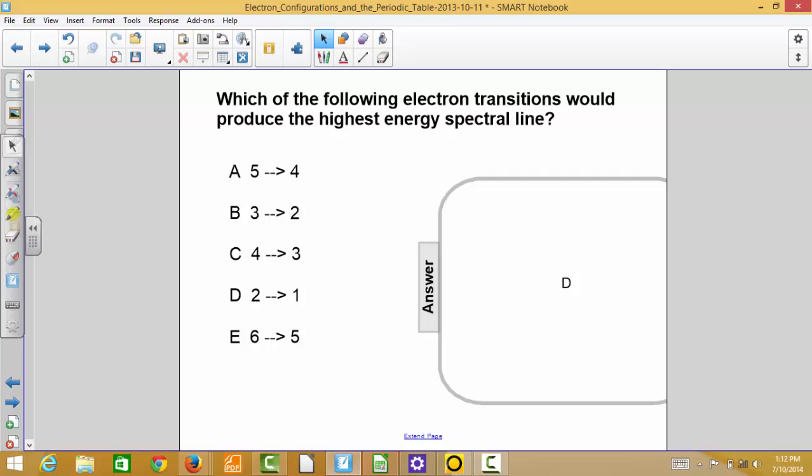That's also where the largest gap exists between main energy floors or main energy levels. So the highest energy spectral line would result from a transition from the second to the first.